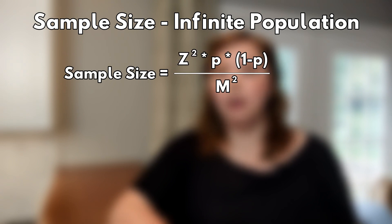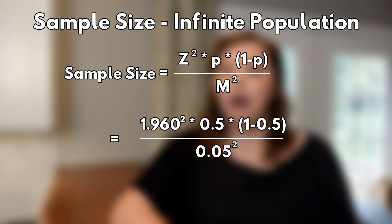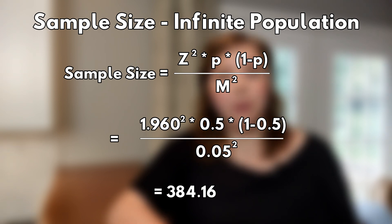Calculating this formula we get a resulting sample size of 384.16. Our sample size, if we're able to get a truly random sample on an infinite population, is 385 data points to be able to say with 95% confidence that our sample lies within that range. Now we adjust our sample size for a finite population. In the case of our M&Ms, our population is 300 million.